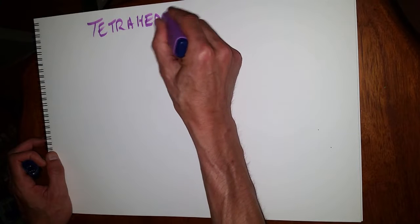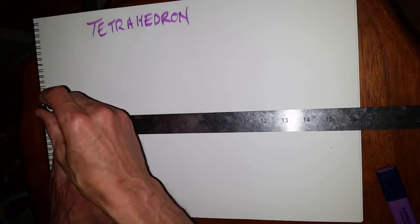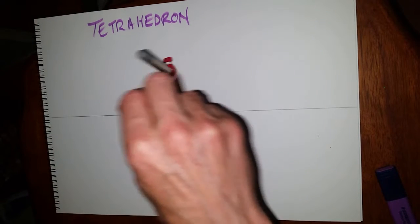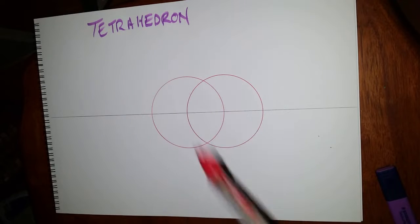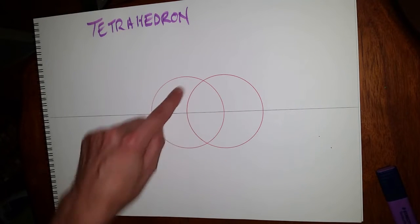Okay, and always you leave a construction line and draw a vesica. Put your point on the construction line, point on the edge of the circle. Vesica, vesica piscis, vesica pisces - the vessel of the fish, this fish symbol.